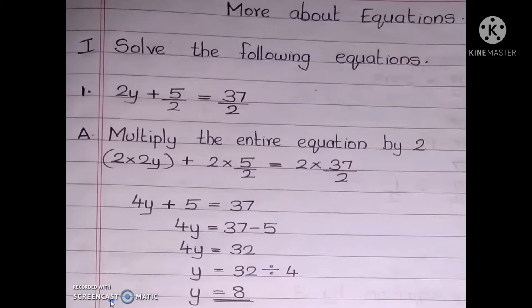Your first question is: solve the following equations. First one: 2y plus 5 by 2 equal to 37 by 2. Students, you can see fractions here — 5 by 2 and 37 by 2. Both are having denominators 2.